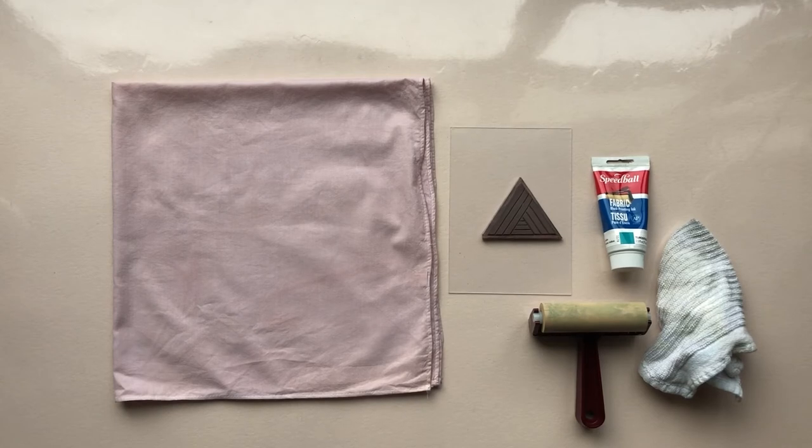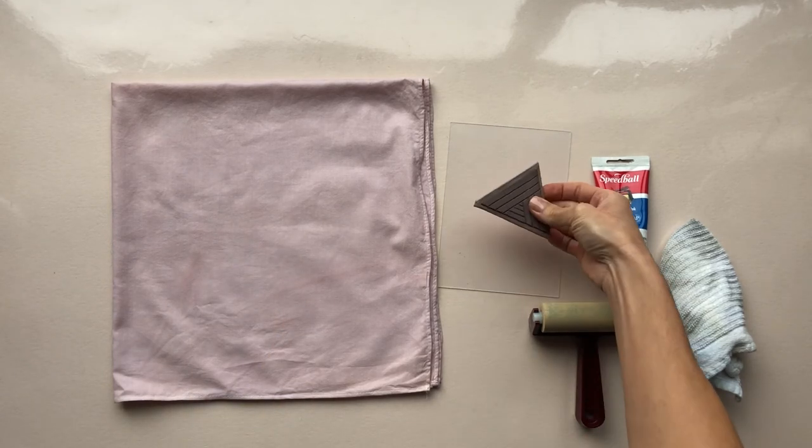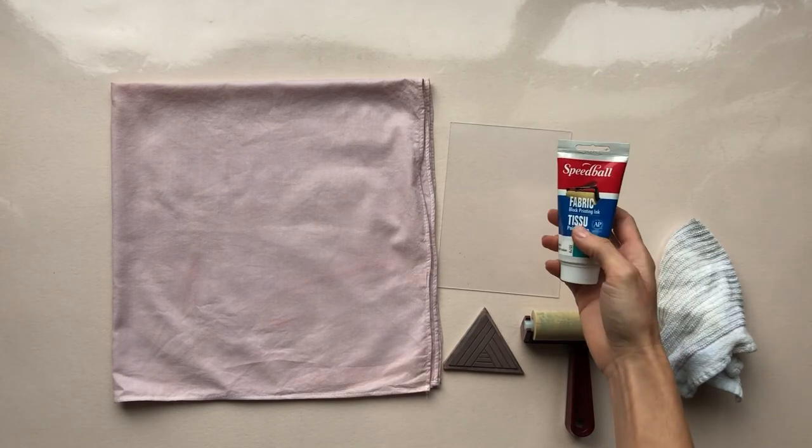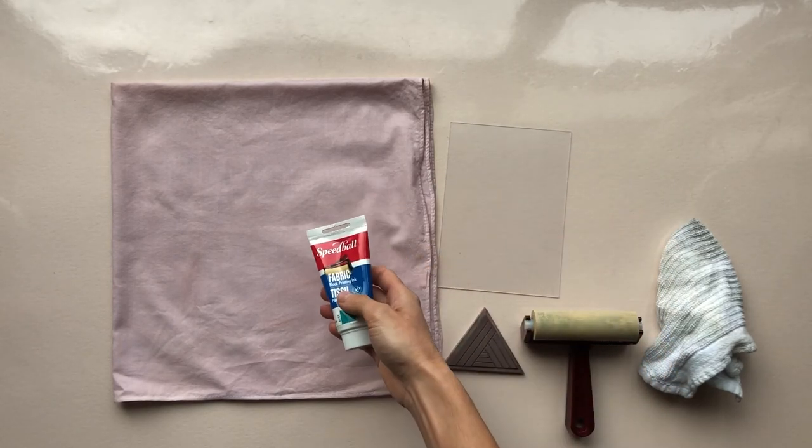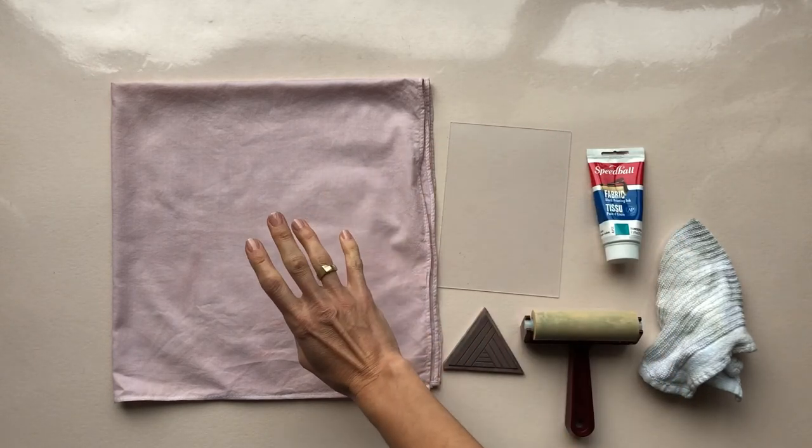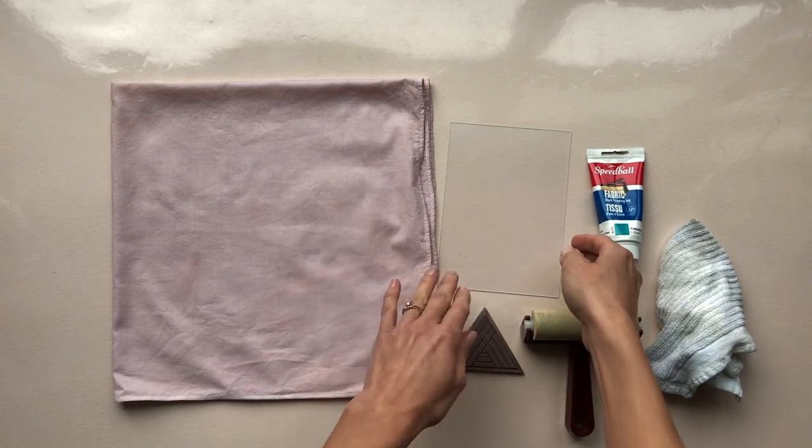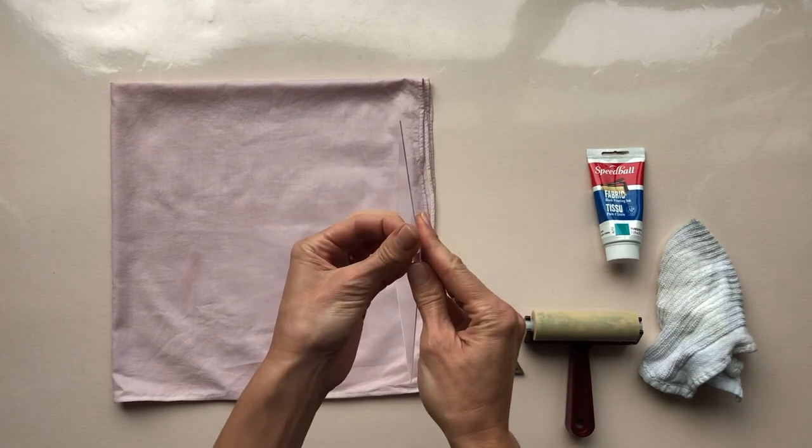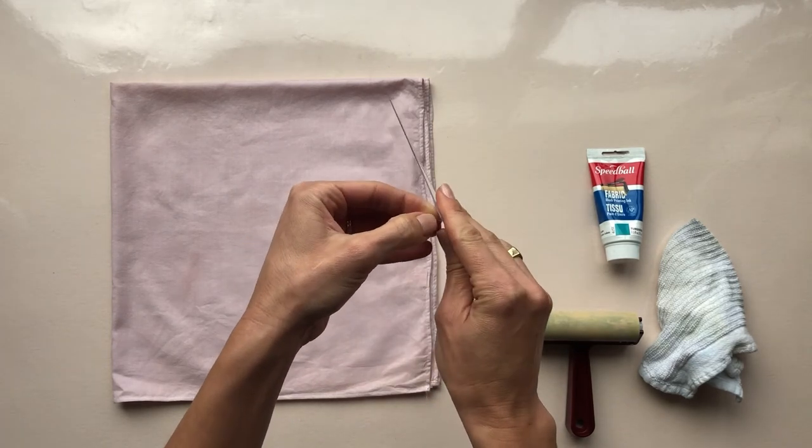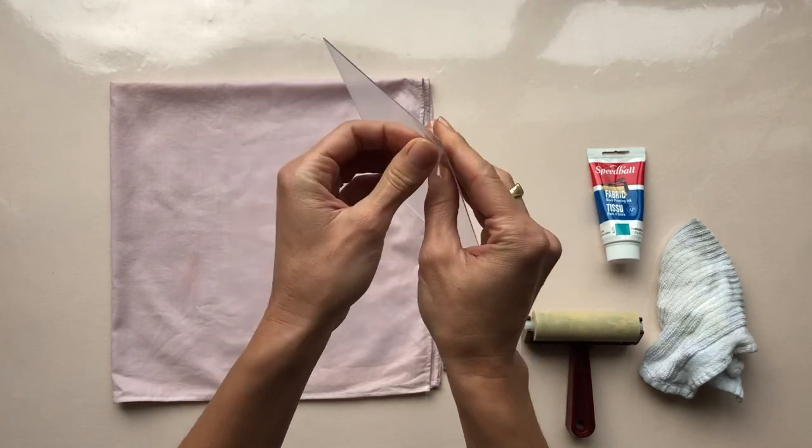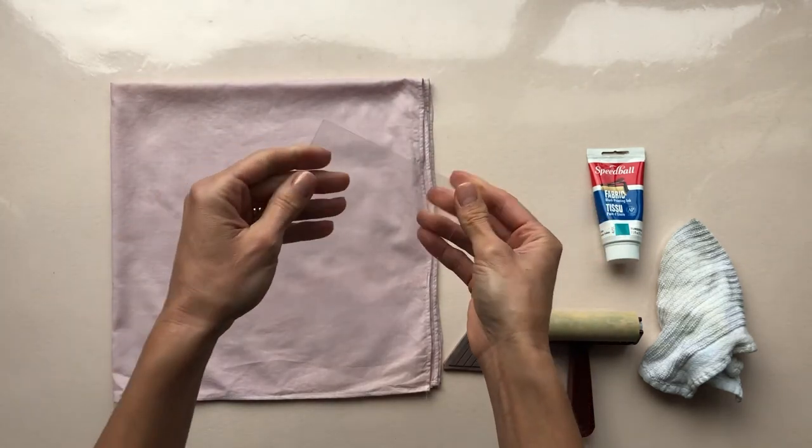So now it's time to start printing. So you'll need your material to print on, your carved stamp, a brayer to spread the ink, the ink, and again, make sure that you have the fabric ink to print on fabric with. This can also work on paper, but you just don't want to use paper ink on fabric if you want it to be permanent. And then you'll need an inking plate to spread the ink on. These come with a very thin layer of plastic on each side, so you'll want to peel that off first before using it.